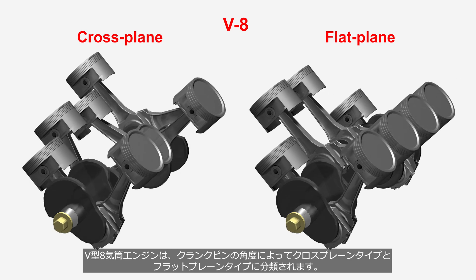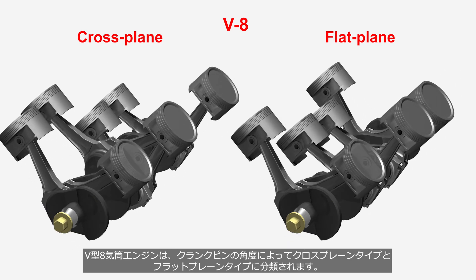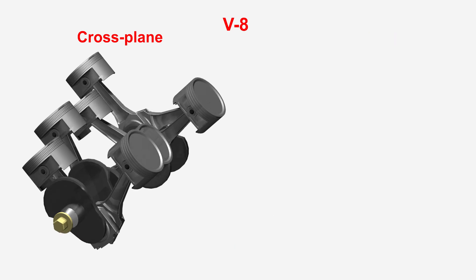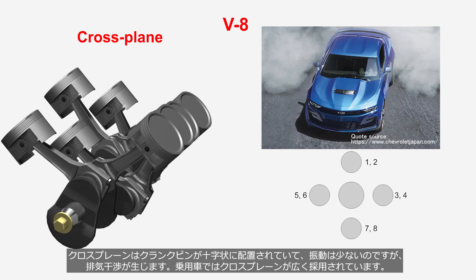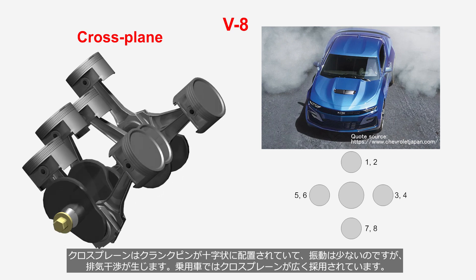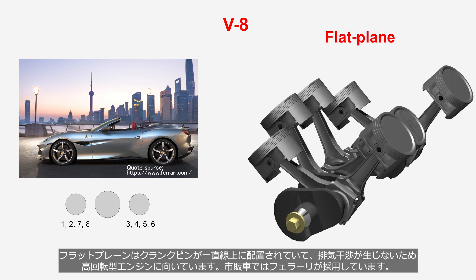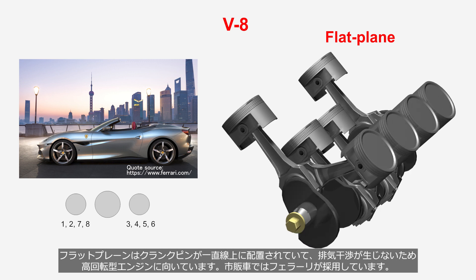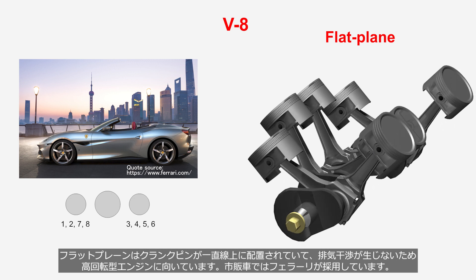V-8 engines are classified into cross-plane and flat-plane configurations, based on the angle of the crankpins. The cross-plane configuration has its crankpins arranged in a cross-pattern, resulting in reduced vibration but uneven exhaust pulses, and is widely adopted in passenger cars. The flat-plane configuration has its crankpins arranged in a straight line, resulting in even exhaust pulses, making it suitable for high-revving engines. All Ferrari V-8 models have adopted the flat-plane crankshaft.